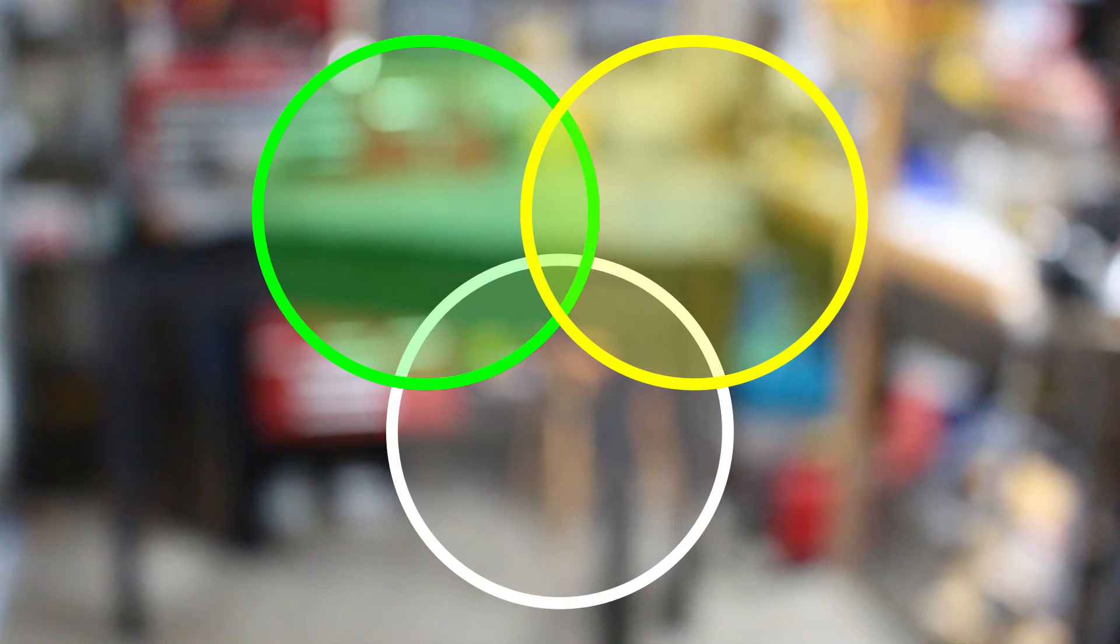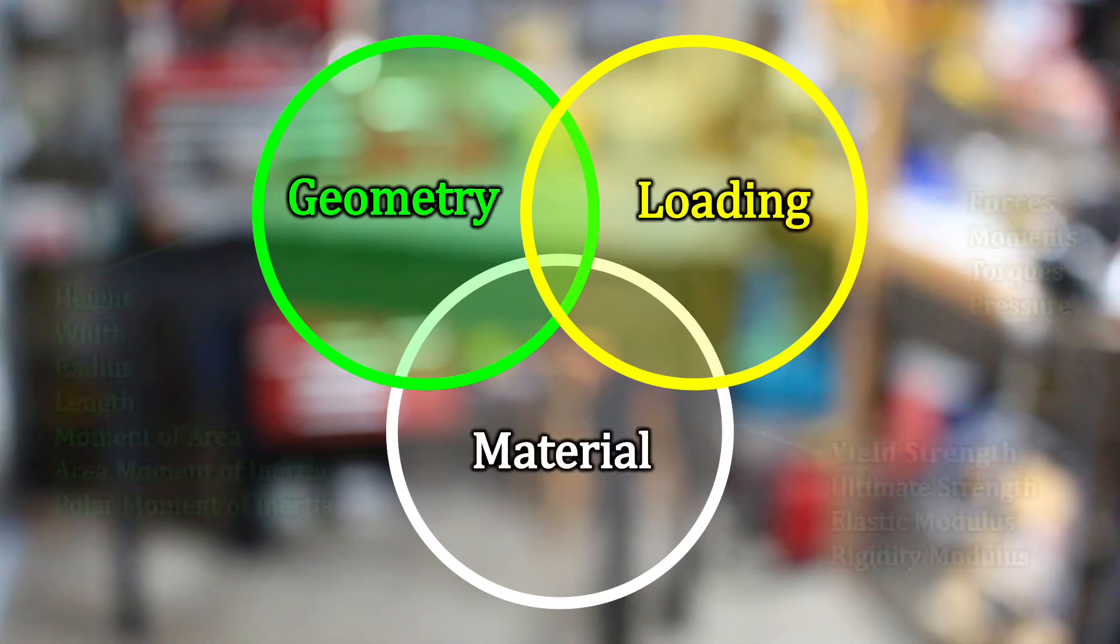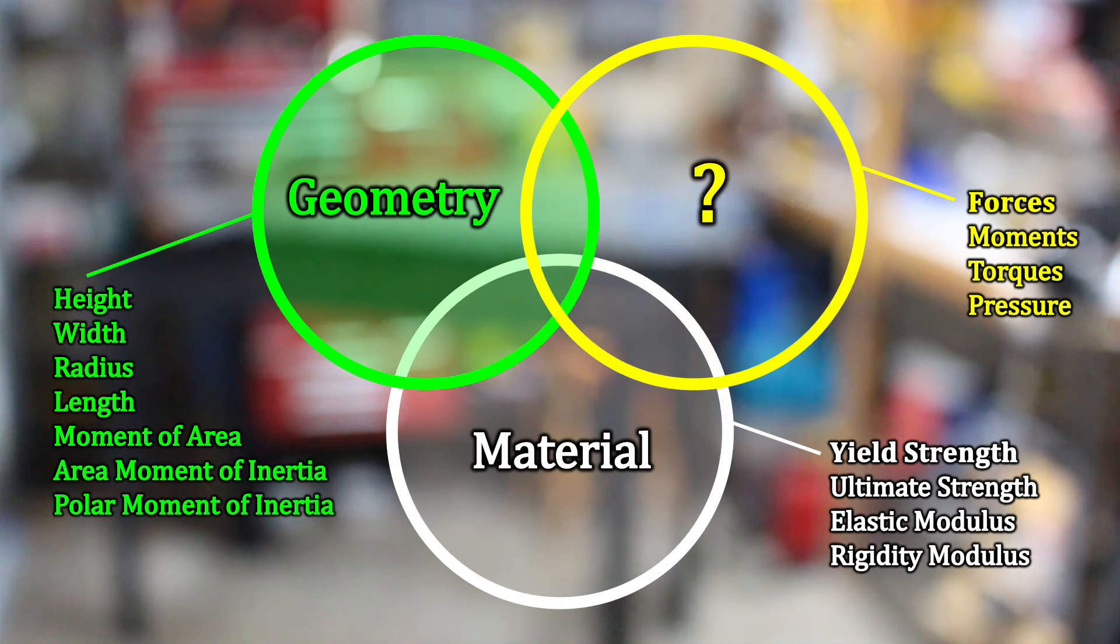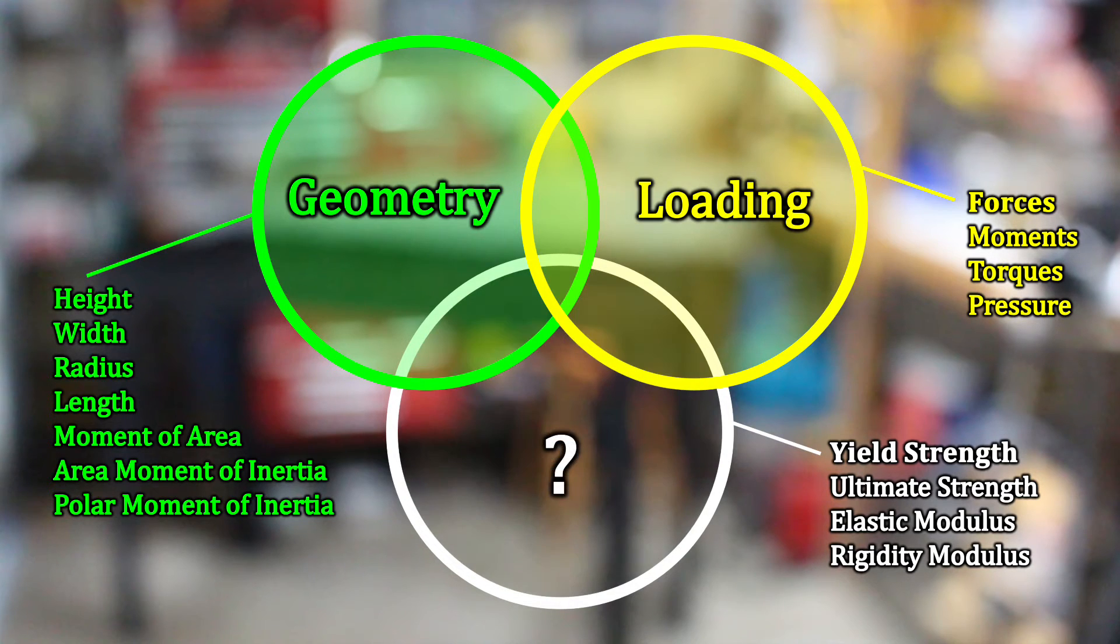Often in mechanics we're trying to find geometry, loading, or material. Having a target load and knowing the material you want to use, you can find geometry. Knowing your geometric constraints and your available material, you can spec a load rating. And with geometric constraints and a target load, you can select the appropriate material.